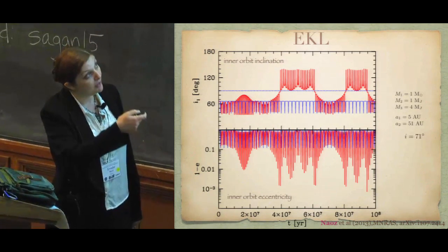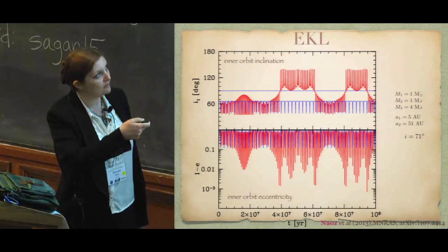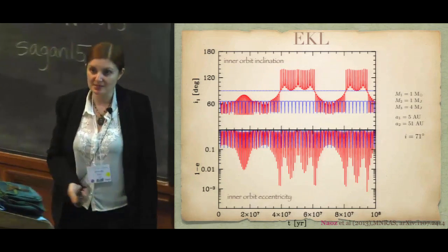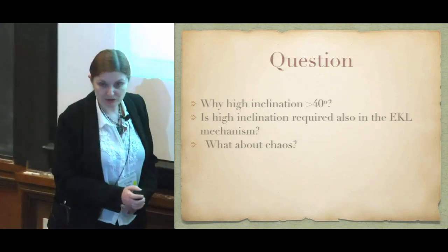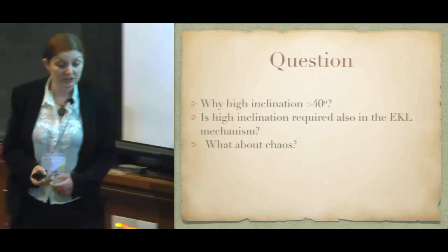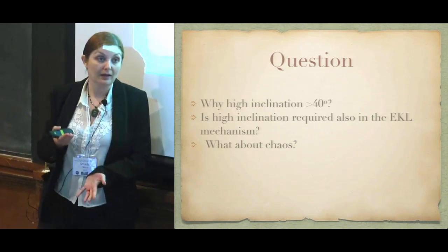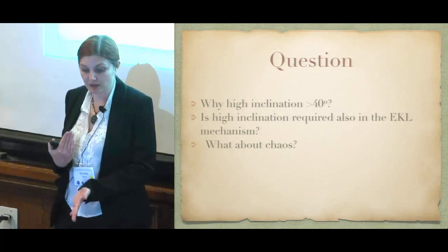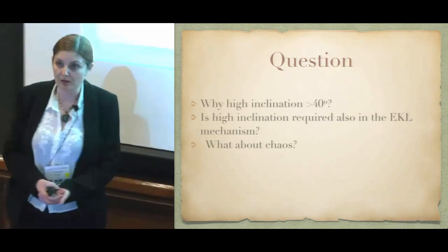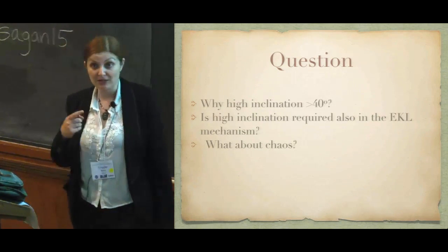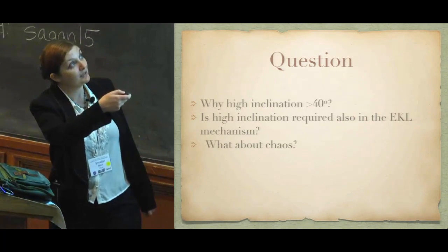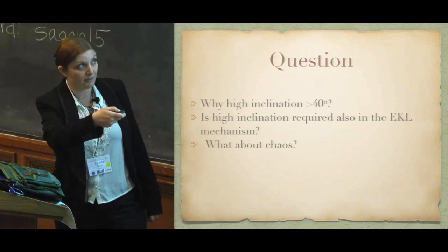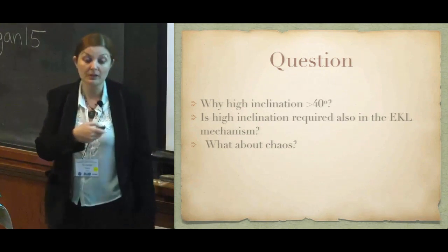Comparing the new calculation to the nominal quadrupole approach shown in blue, there is a qualitative difference between the two. The behavior is not very regular — it's hard to define a regular timescale. These are three-body systems, so they should be chaotic, and they are. I'll answer three questions: why does the inclination need to be high, do we actually require high inclination to trigger the eccentric Kozai-Lidov mechanism, and where do we see the chaos?